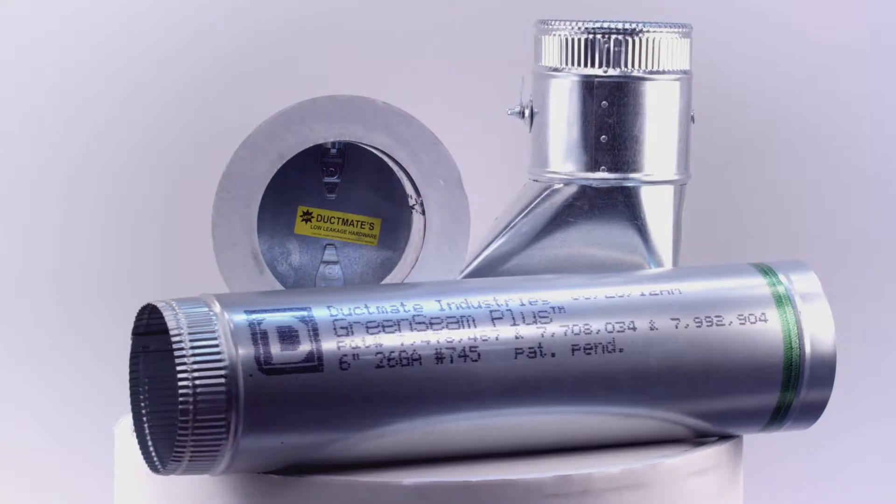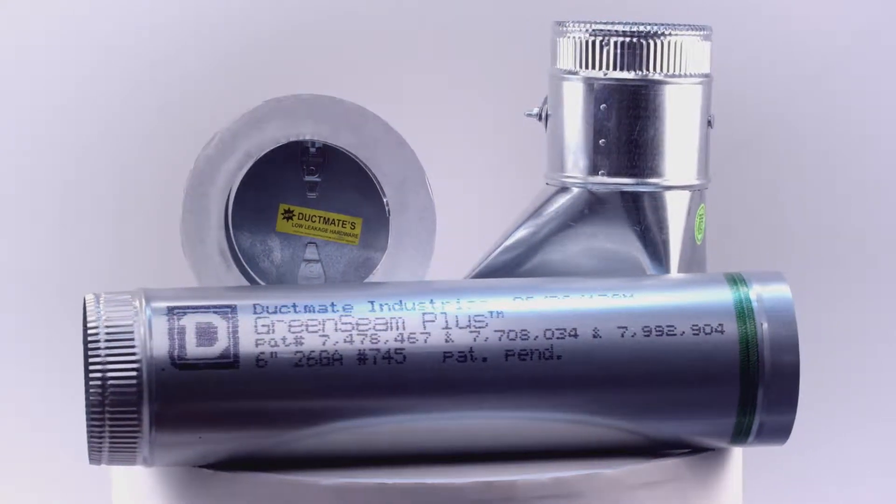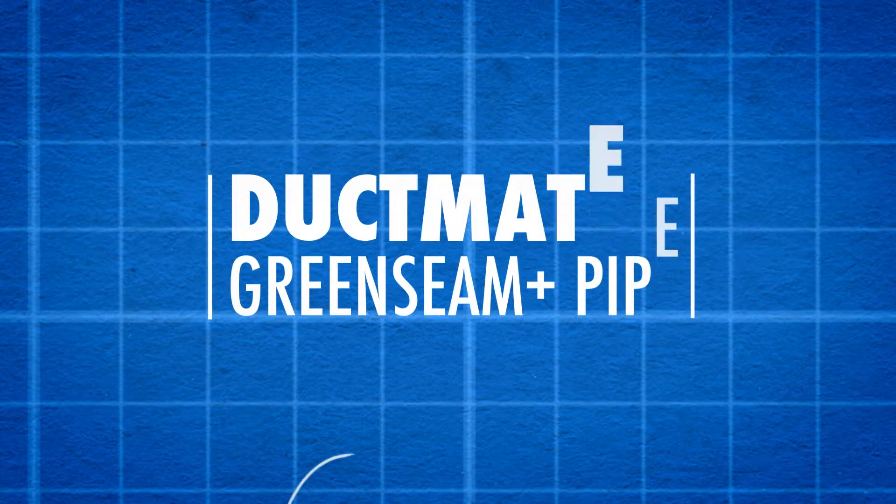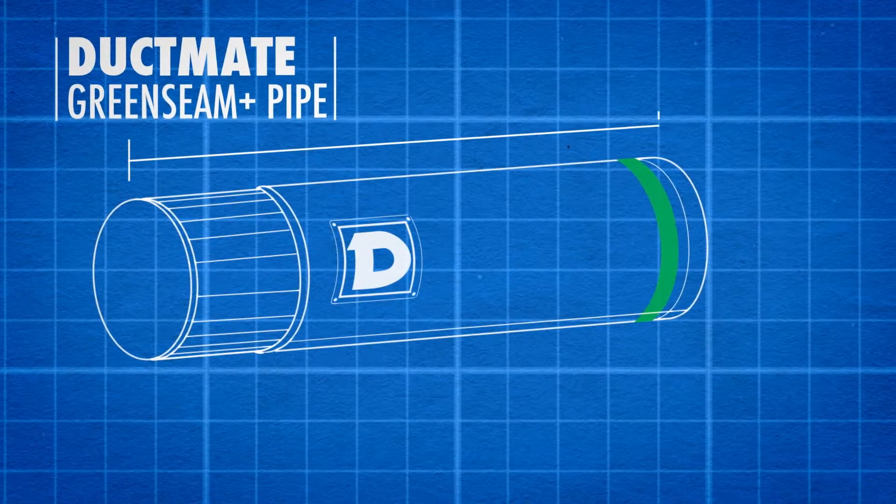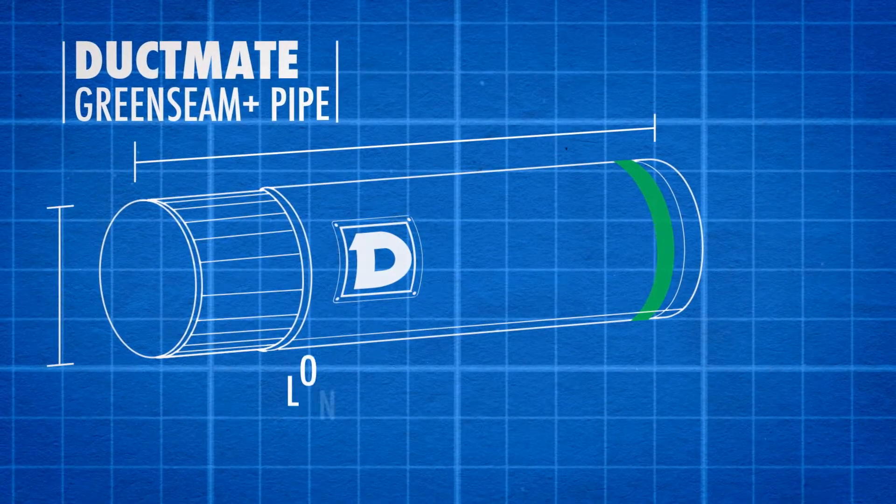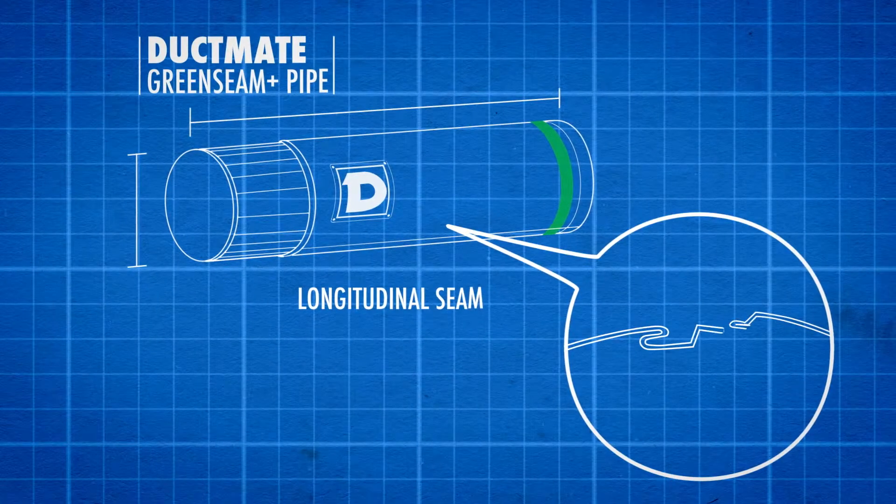Introducing the innovative Green Seam Plus system, DuctMate's factory sealed snap lock pipe and fittings. The Green Seam Plus pipe incorporates a factory-applied gasket along the longitudinal and transverse joints, which virtually eliminates duct leakage.